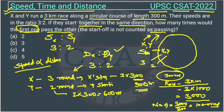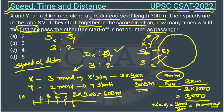X covers 900 meters in the same time Y covers 600 meters. Total rounds to complete the race is 10. They meet every 3rd round — at round 3, round 6, and round 9. So they meet 3 times within the 10 rounds.